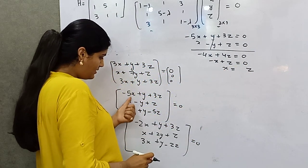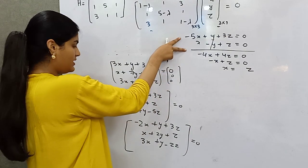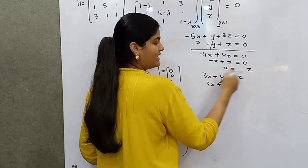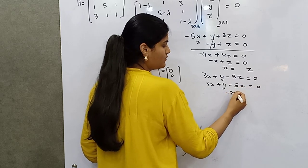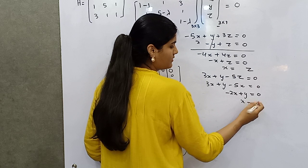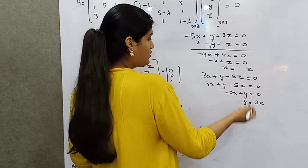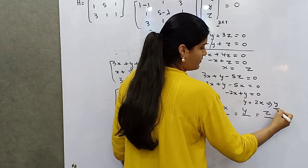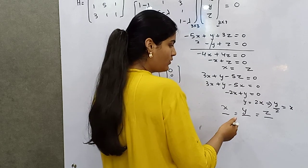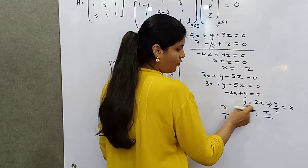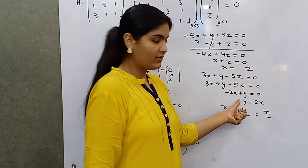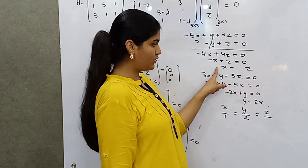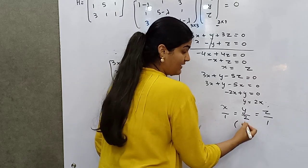Substituting x = z into the third equation, we get 5 minus 3 = 2, so y = 2x. Therefore the eigenvector [x, y, z] has coefficients: x = 1, y = 2, z = 1. The eigenvector for lambda = 6 is [1, 2, 1].